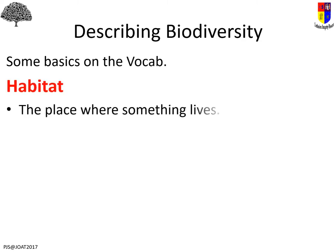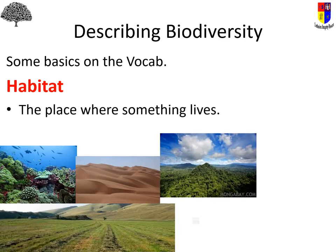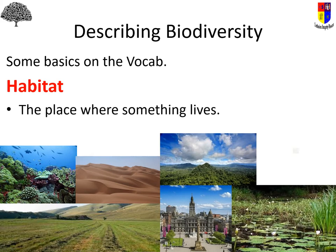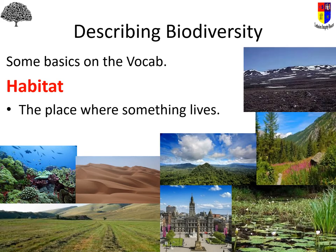Habitat basically means the place where something lives. You quite often define an ecosystem by its habitat — so it could be a field, a city, a mountaintop, the ocean, or the deep ocean. You can be quite precise or quite vague, but it's the place that something lives.